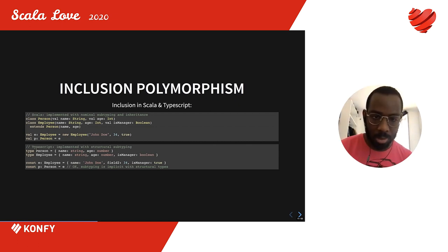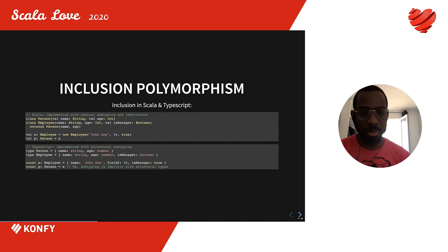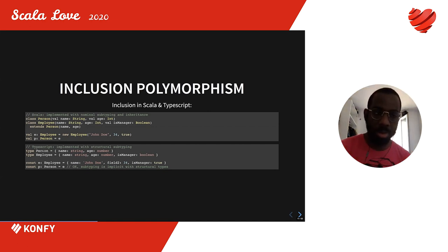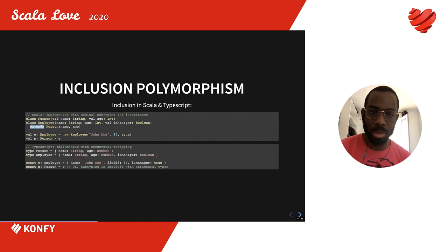In TypeScript, if I have a record type 'Person' with fields name and age, and a record type 'Employee' with an extra field 'isManager', I can assign a value of type 'Employee' to a variable expecting a 'Person'. The difference is that in TypeScript I don't have to explicitly write that 'Employee' is a subtype of 'Person' — the subtyping relationship is inferred from the structure of the records. This is structural subtyping. In Scala, I must explicitly use the 'extends' keyword — that is nominal subtyping.